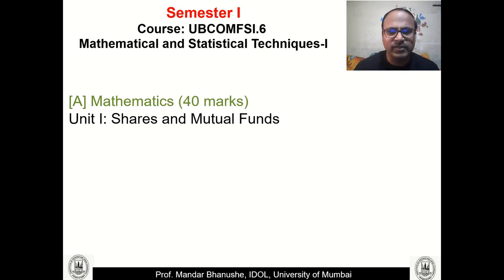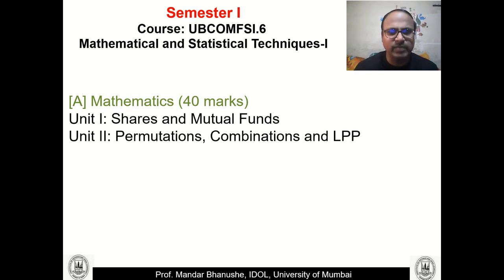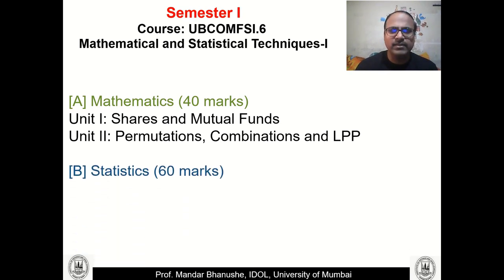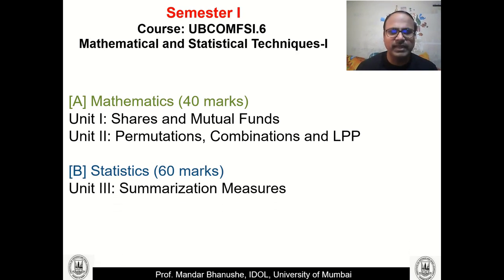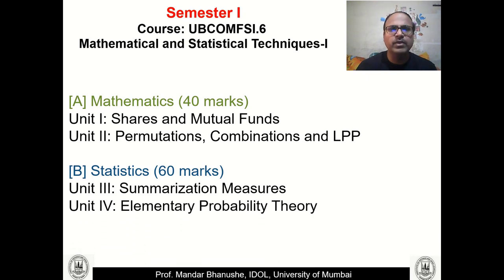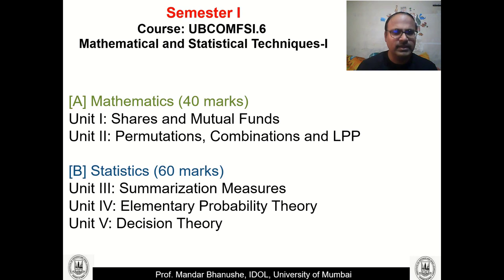In the first section of Mathematics we have Unit 1 as Shares and Mutual Funds, and Unit 2 as Permutations, Combinations, and Linear Programming Problems. In the Statistics Section 2, which is of 60 marks, we have three units: Unit 3 on Summarization Measures covering different types of averages like mean, median, and mode; Unit 4 on Elementary Probability Theory; and Unit 5 on Decision Theory, which is very important for managerial applications. That covers Semester 1's five units.